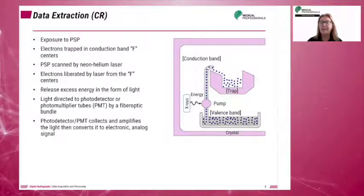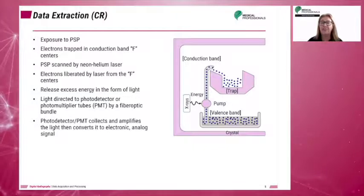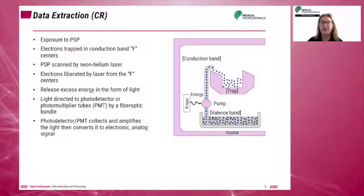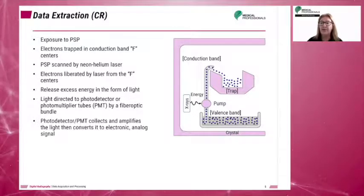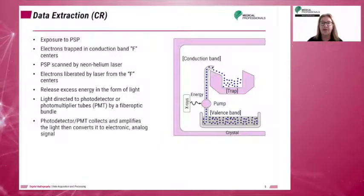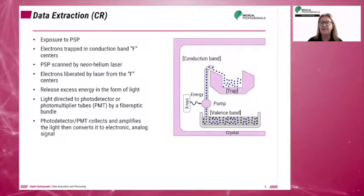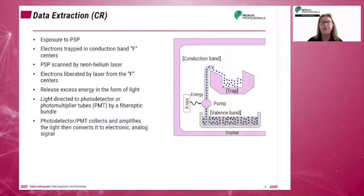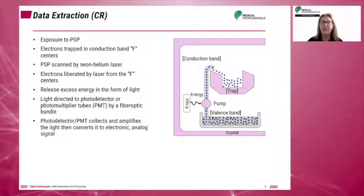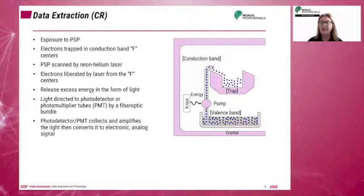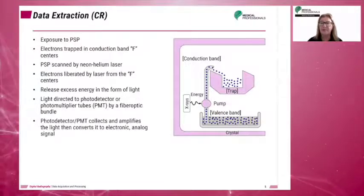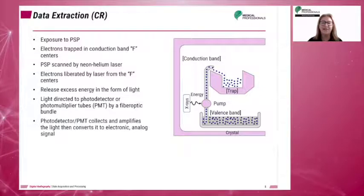These trapped electrons are the latent image. The PSP is scanned by the laser in the plate scanner, which liberates the trapped electrons. As the electrons return to their shells in the phosphor atoms, they release energy in the form of light. The light released is directed to a photodetector by a fiber-optic bundle, where it is amplified and converted to an electrical or analog signal. The magnitude of the electrical signal is directly proportional to the intensity of the remnant beam.